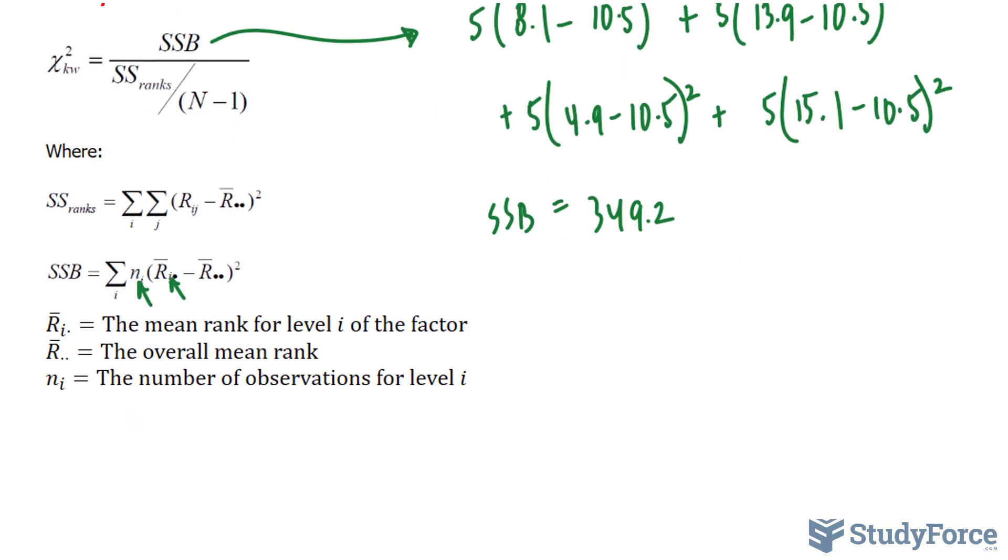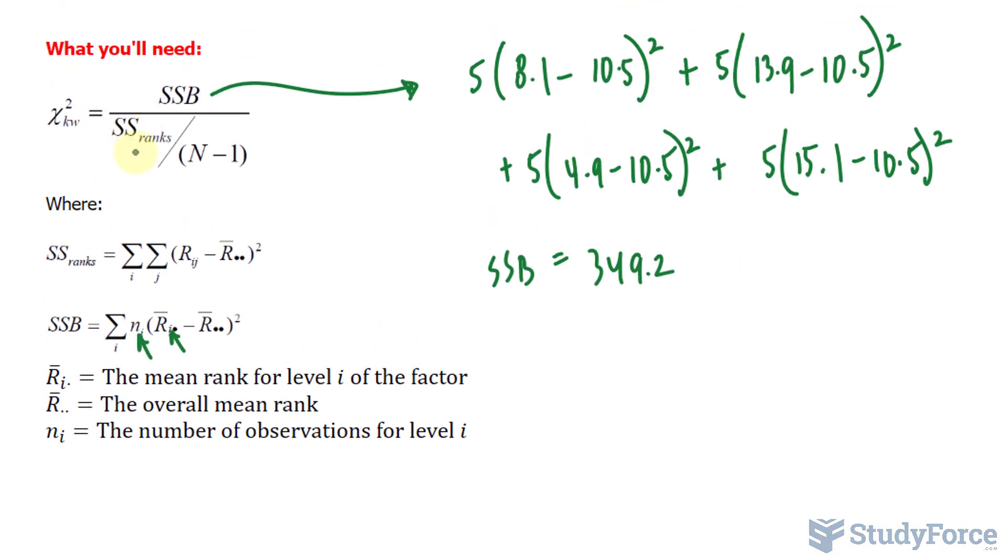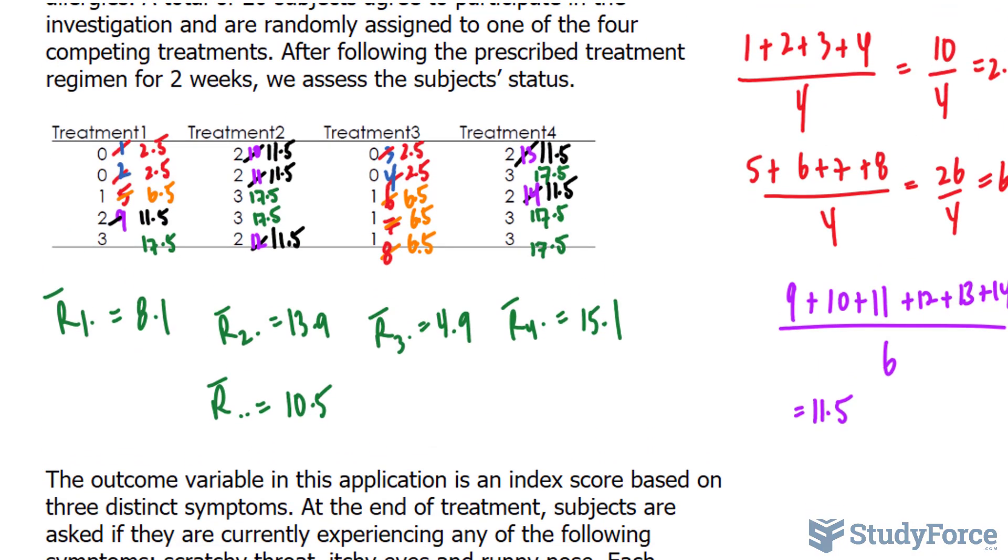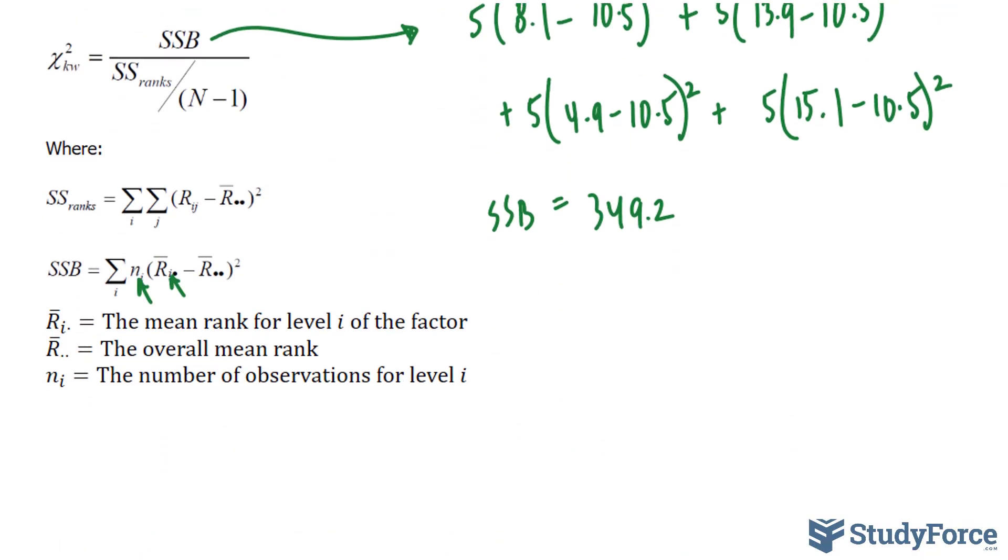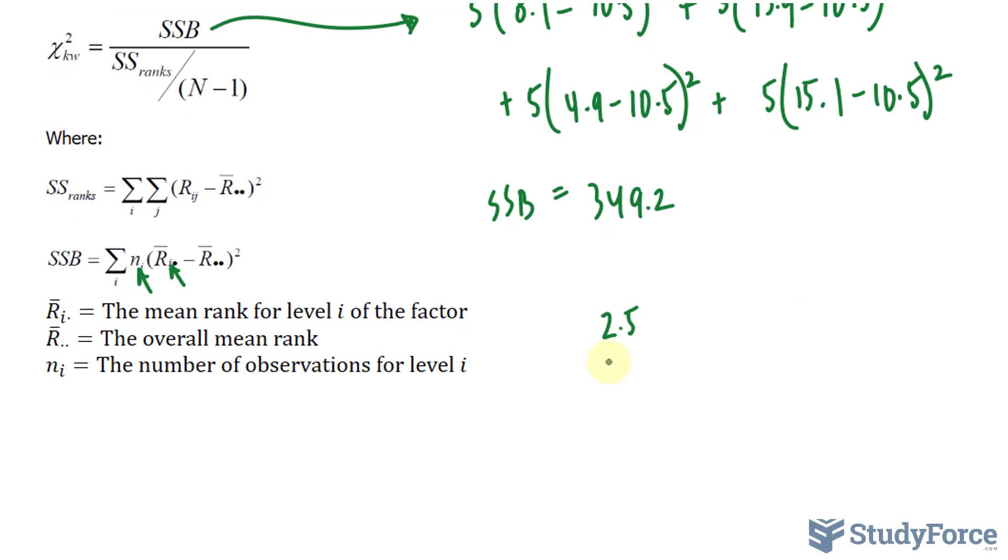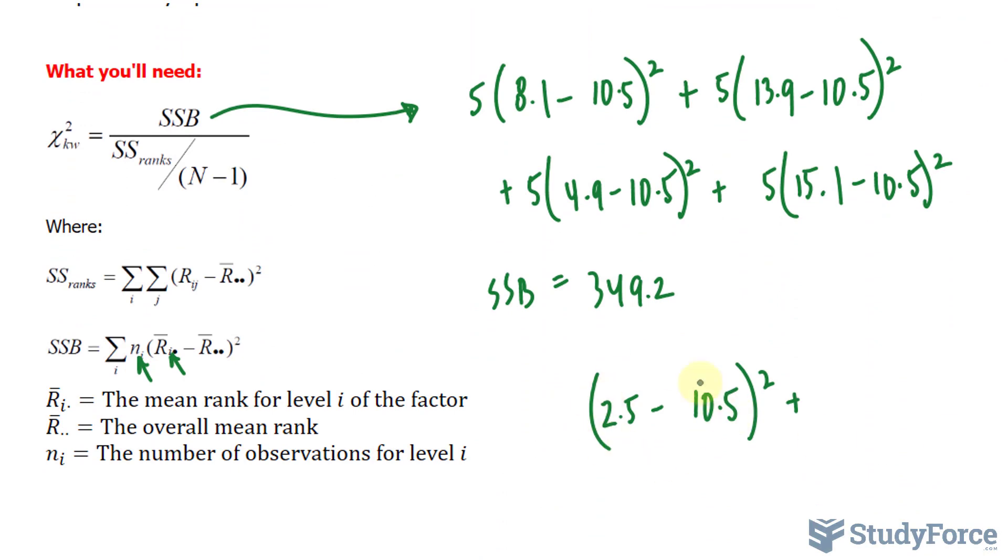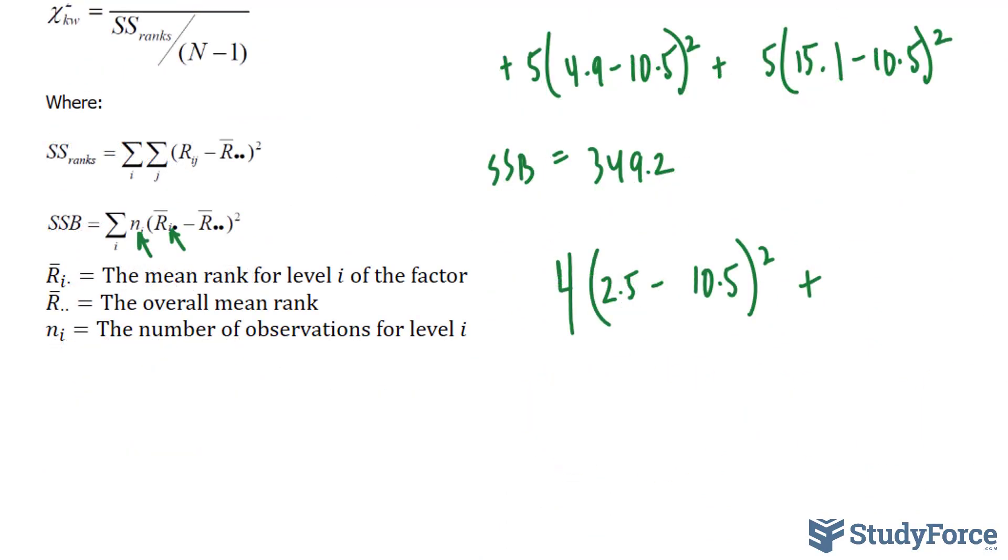Now we focus on the denominator, SS rank. We will take each rank and subtract it by the mean. So, we had a rank of 2.5, 2.5 minus the mean of 10.5, and we square that. Plus, since we had four 2.5s, instead of writing this out three more times, I'll just multiply it by 4.